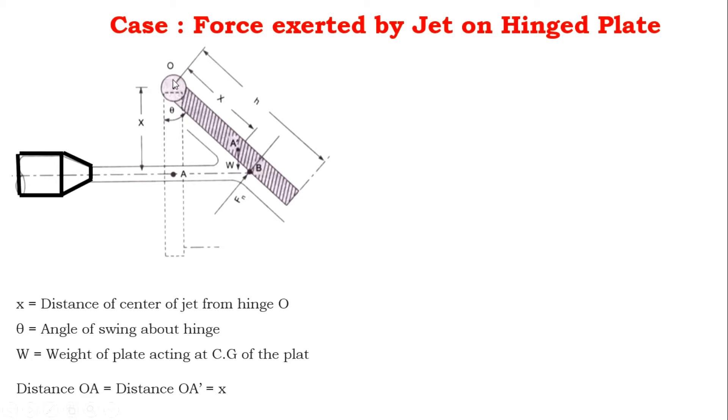The initial position of the vertical plate is displayed in the figure by dotted lines. When the water jet strikes the plate, the plate will swing through an angle theta. After the jet strikes the plate, point A will now be at point A' as shown in the figure.